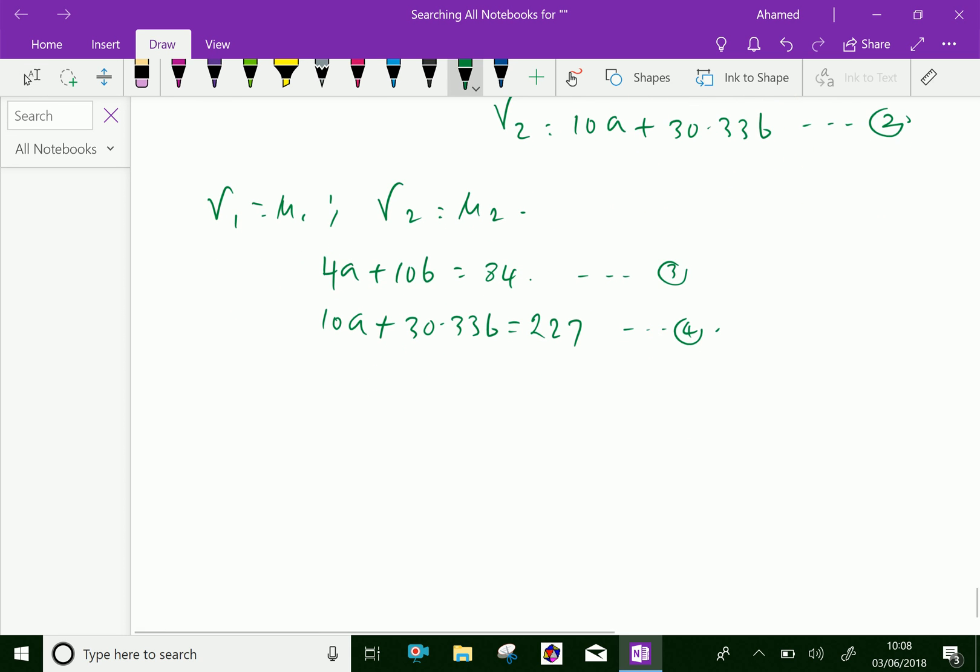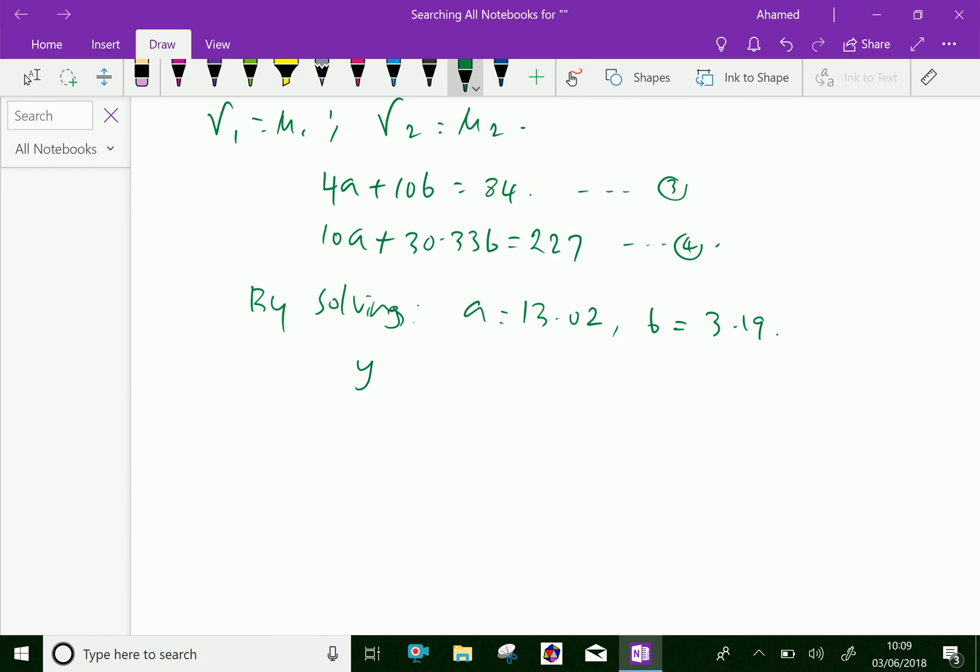By solving equations 3 and 4, we got a is 13.02 approximately and b equal to 3.19. Therefore our required equation of the straight line is y equal a plus bx which is equal y equal 13.02 plus 3.19x. We got the equation of the straight line by using this data by using method of moments.